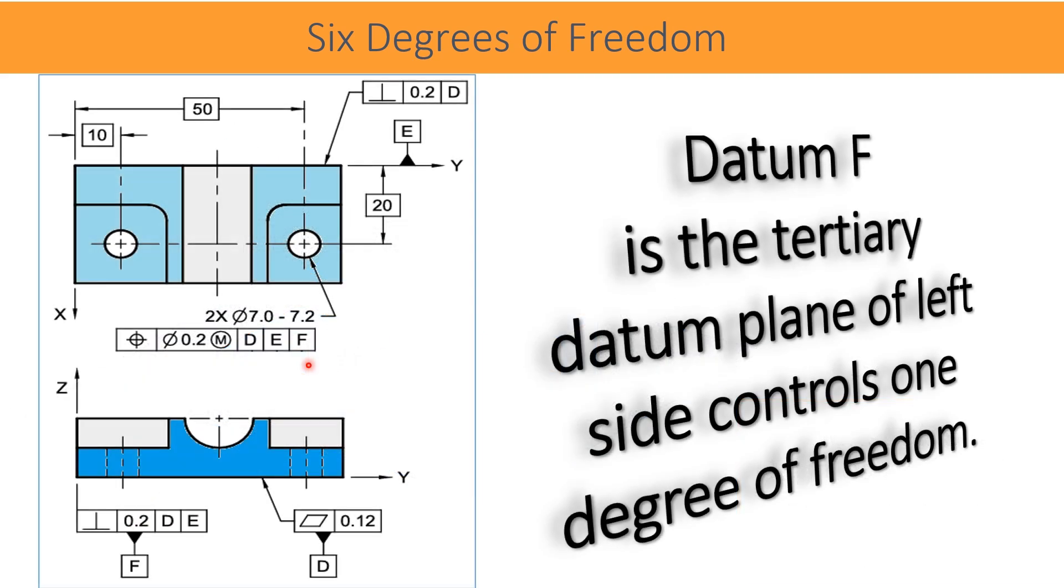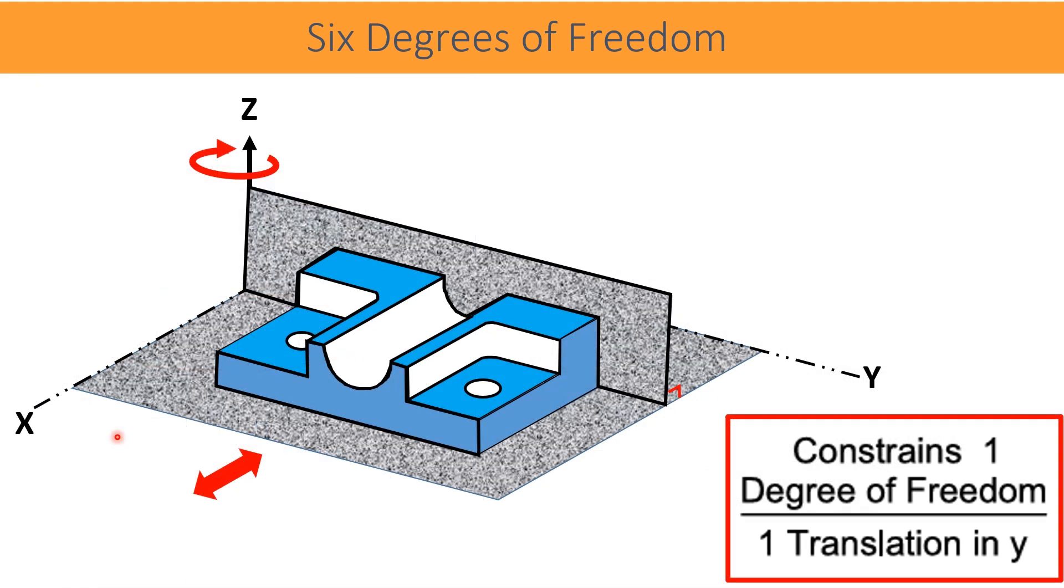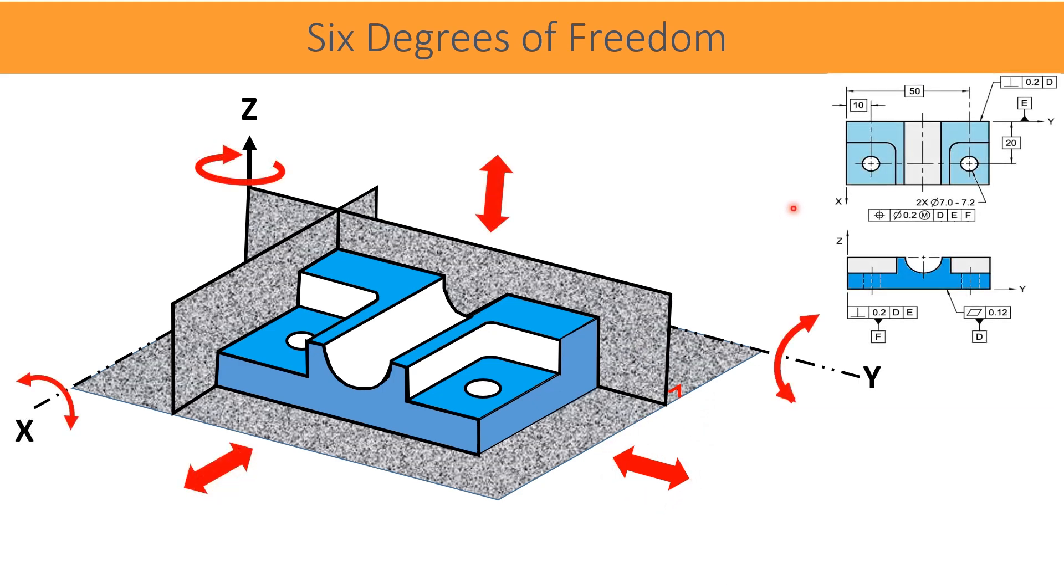Datum F is a tertiary datum. This is a plane of left side of the part. Tertiary datum plane F is perpendicular to datum plane D and datum plane E. It constrains only the remained linear translation. Thus, all three datums D, E, and F constrain all six degrees of freedom. All three datum planes are perpendicular to each other, so axes X, Y, and Z also became perpendicular to each other.